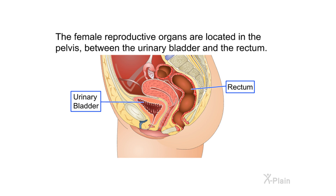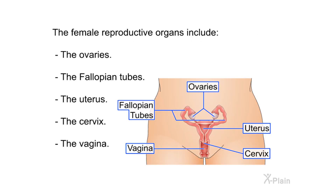The female reproductive organs are located in the pelvis between the urinary bladder and the rectum. The female reproductive organs include the ovaries, the fallopian tubes, the uterus, the cervix, and the vagina.